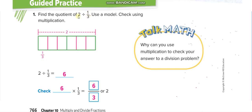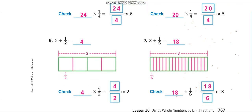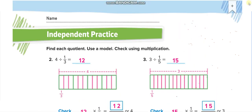2 divided by 1/3: multiply the whole number by the denominator — 2 times 3 equals 6, so the answer is 6. Checking the answer: 6 times 1/3 equals 6/3, which equals 2. We get back our original whole number, so the answer is correct.